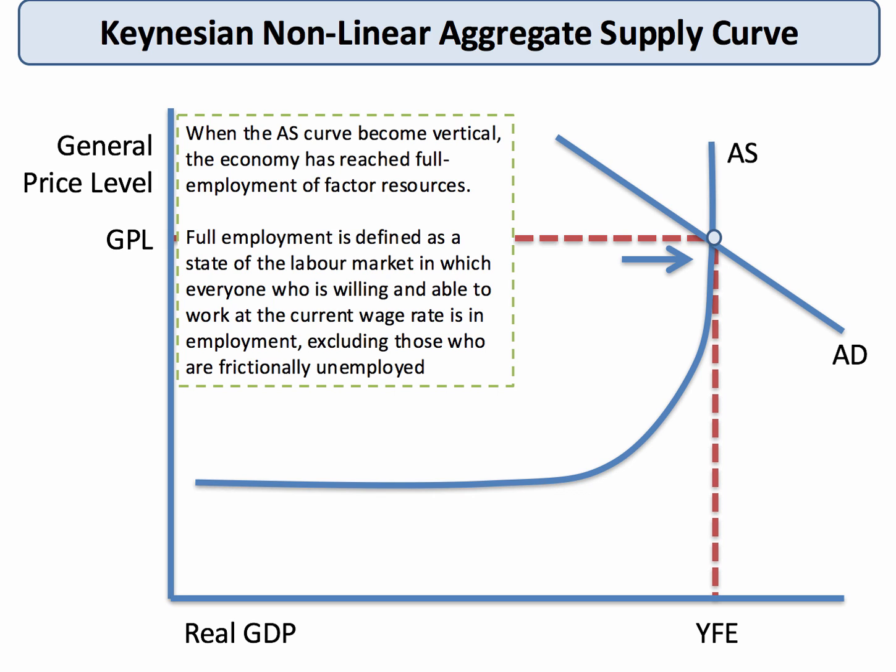When the aggregate supply curve becomes vertical, the economy is said to have achieved a position of full employment of factor resources. In the labour market, for example, you might define full employment as a position where everybody who is willing and able and actively looking for work at the current wage rate is able to find work, and the remaining unemployment is essentially frictional. At this point, the economy has reached a capacity position.